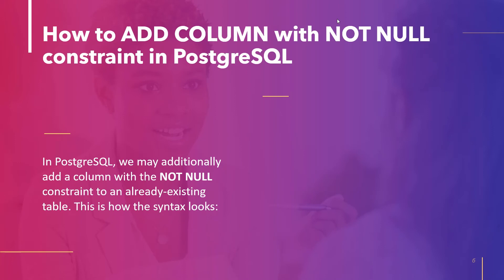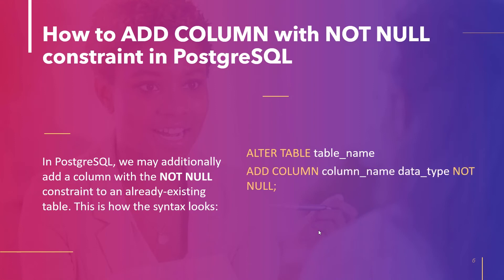The last topic of this tutorial is how to add a column with a NOT NULL constraint in PostgreSQL. We can add a column with a NOT NULL constraint to an existing table. The syntax is: ALTER TABLE table_name, ADD COLUMN column_name data_type NOT NULL.